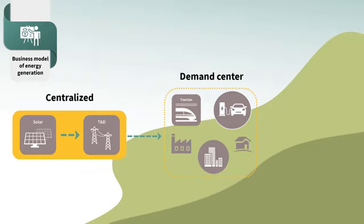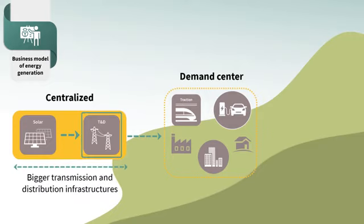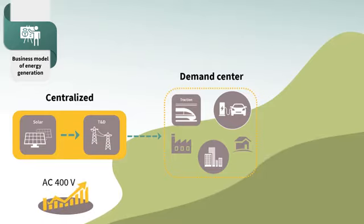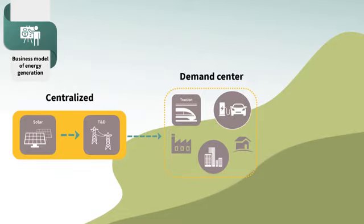This, by consequence, requires bigger transmission and distribution infrastructures. This type of system is connected to transmission electrical networks, which allows increasing the system's AC voltage beyond the distribution grid's voltage level of 400 volt. The value of the increased system voltage further enables system cost reduction. A typical example for centralized energy generation is utility scale.